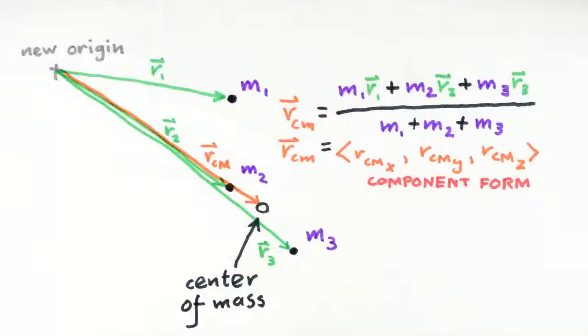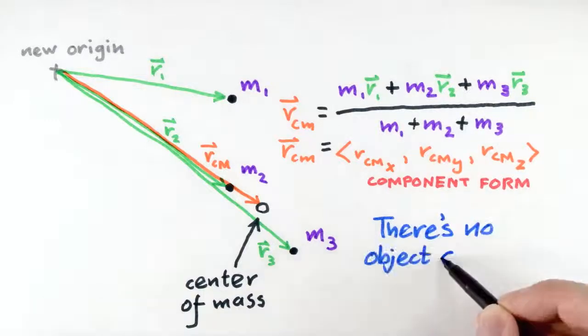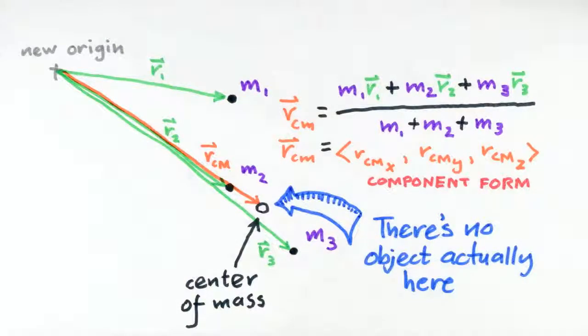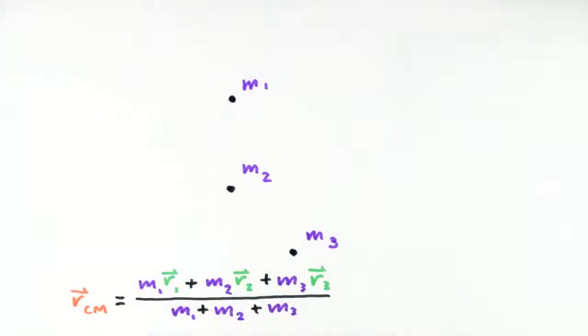Third, the center of mass of a system can lie outside of any piece of mass in the system. The center of mass does not have to be attached to or inside a piece of matter. Fourth, we show here the center of mass defined for three masses. However, this procedure works for any number of point masses.